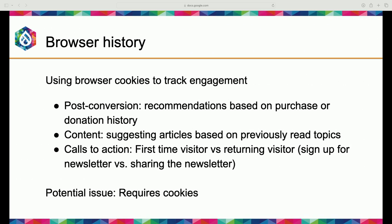Browser history — we're talking user cookie history for your own website. Returning visitors are important; they're returning so it's safe to assume they're interested. Examples include post-conversion recommendations based on purchase or donation history — just like Amazon recommendations. If a nonprofit successfully gets a donation, they can start promoting other ways to help, like volunteering, rather than always giving them the same ask.